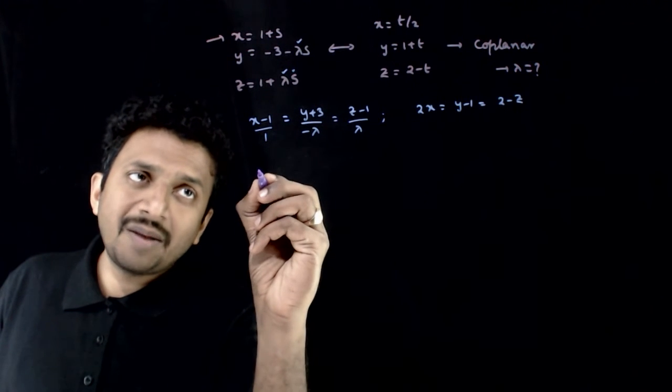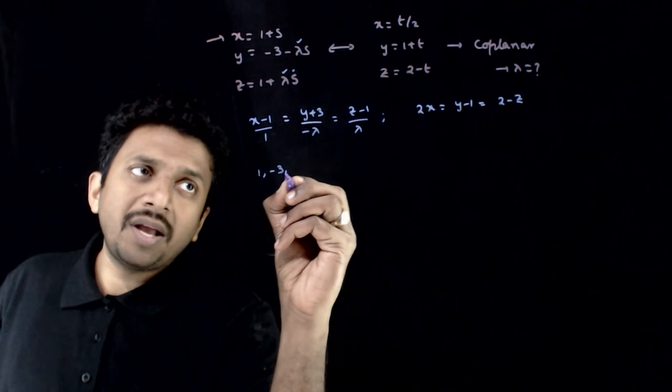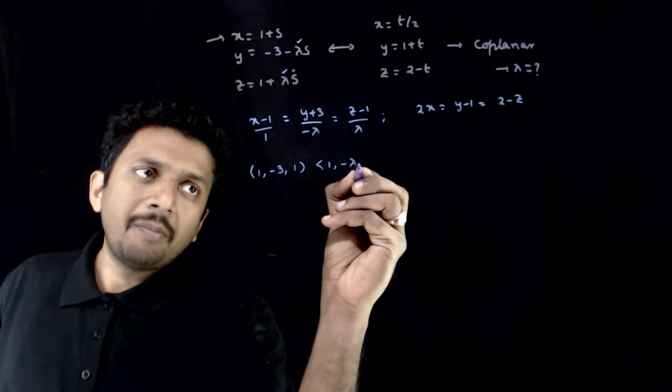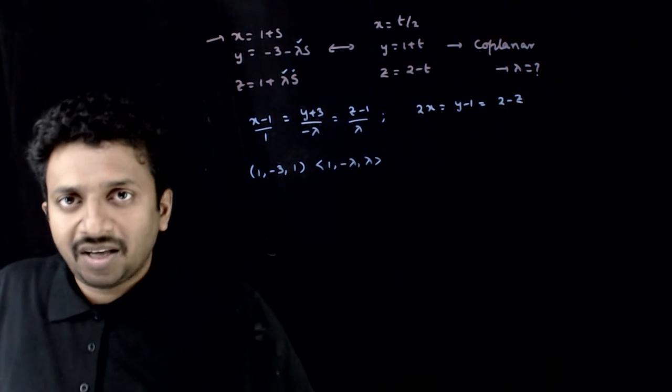What are the properties of the first line? The first line passes through the point 1, minus 3, 1 and has direction ratios 1, minus lambda, lambda. These are the DRs.